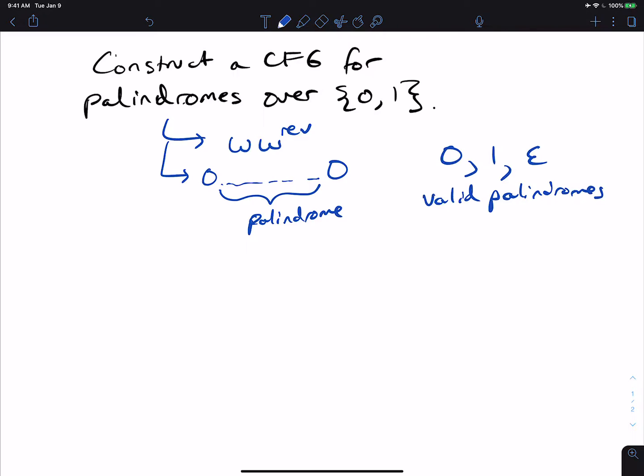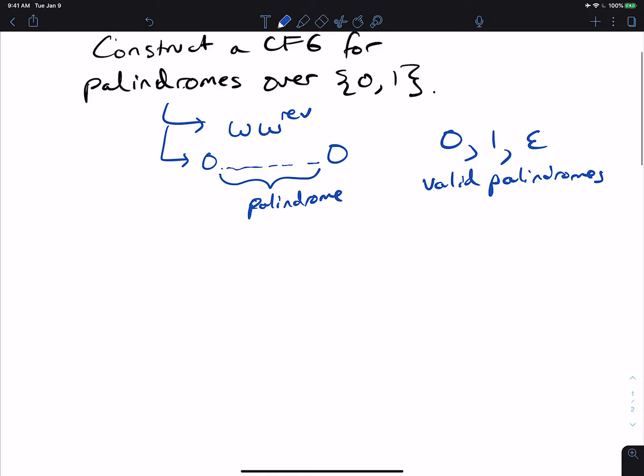You could only want, say, even length palindromes, but here we're going to consider all length palindromes that are equal to their reverse.